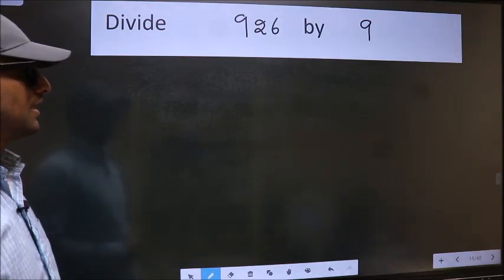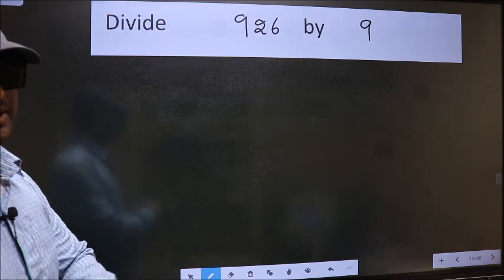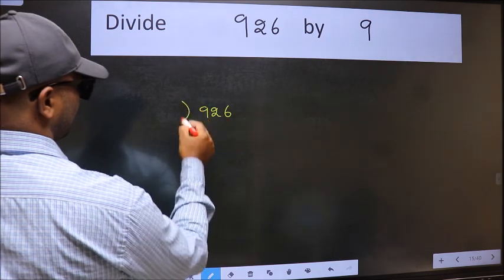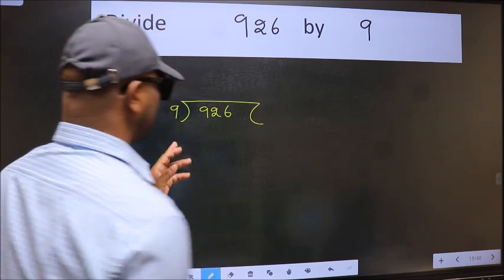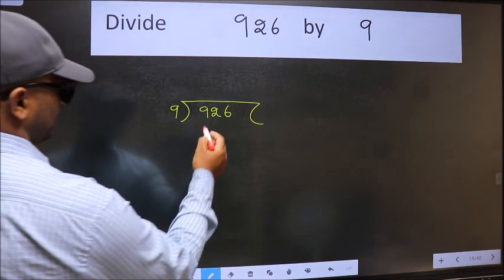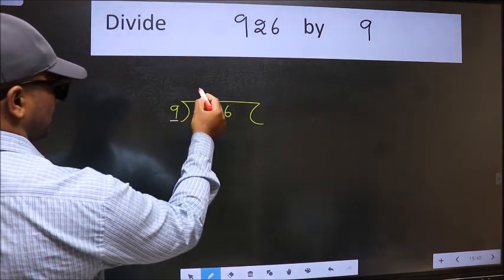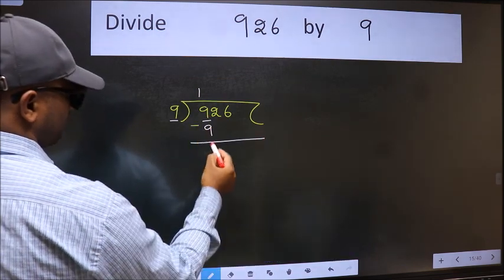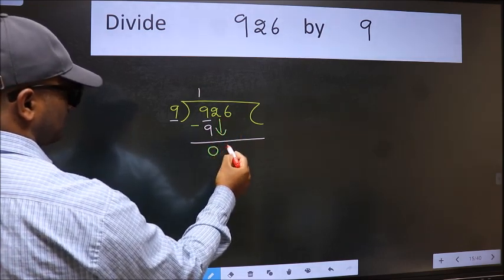Divide 926 by 9. To do this division, we should frame it in this way: 926 here and 9 here. This is step one. Next, we have nine and here nine. When do we get nine in the nine table? Nine ones is nine. Now we should subtract, we get zero. After this, bring down the beside number two down.